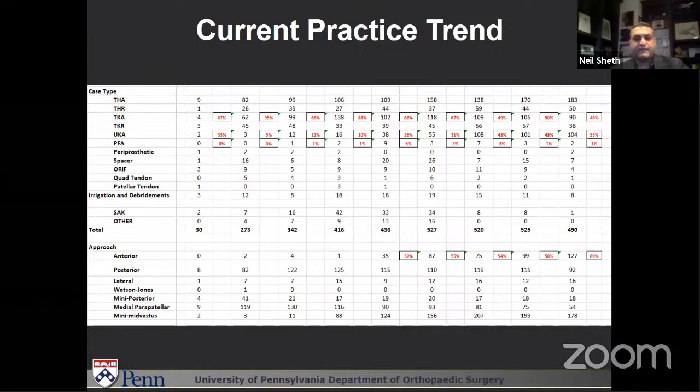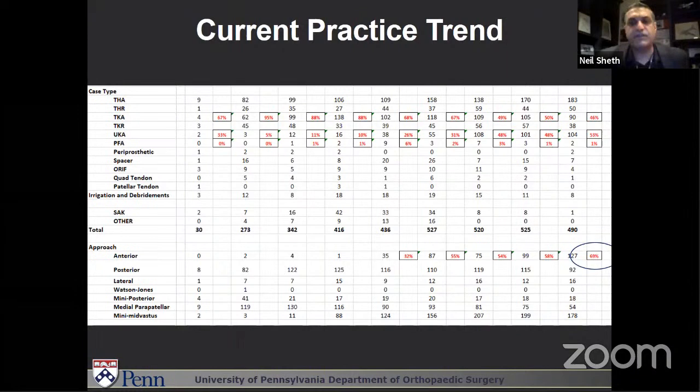Looking at my current practice trend over the last four years, we're now almost 70% anterior on most of our hips, and every year just continues to grow a little bit. In 2016 we did about 35, 2017 about 87, 2018 about 75, about 100 in 2019, and in 2020 about 127 patients. We're probably heading more and more towards doing more anterior as my indications have expanded and we're taking on more complex patients.